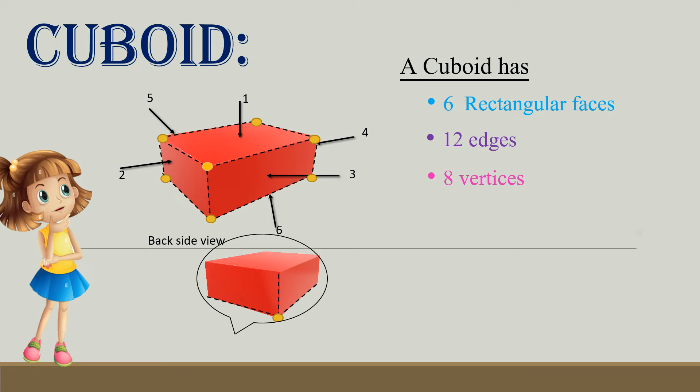So, a cuboid has six rectangular faces, 12 edges, and 8 vertices. Their opposite sides are equal. Examples: brick and book.